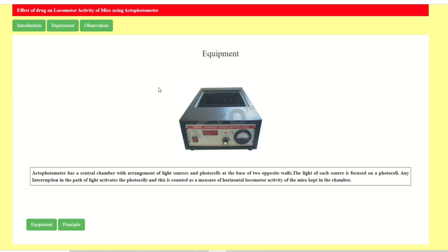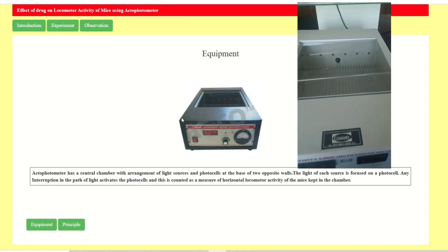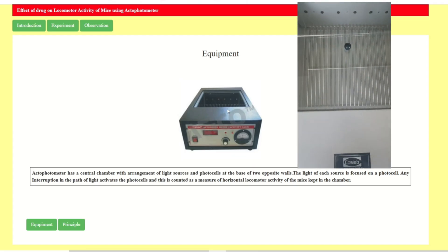Once you enter into the xform software you will see the interface, and on that you will find the equipment known as the actophotometer. The actophotometer has a central chamber with an arrangement of a light source and photo cells at the base of the two opposite walls.